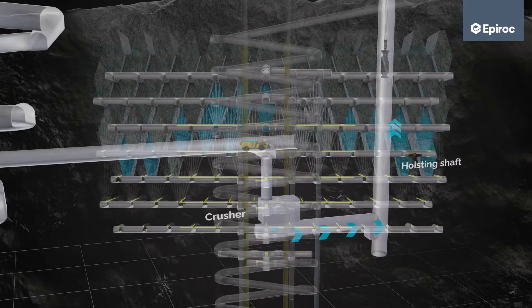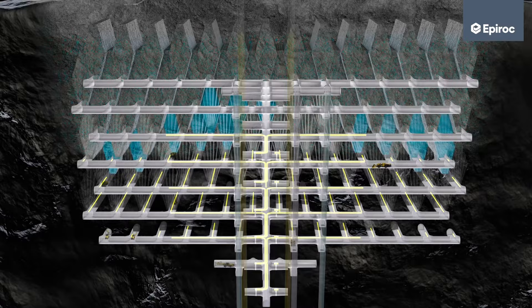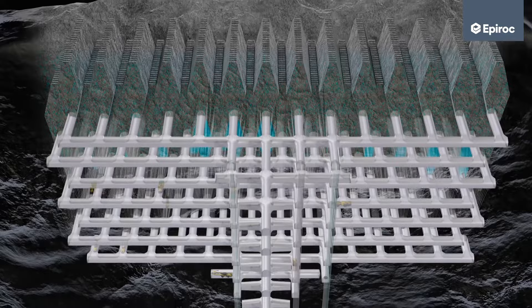Each sublevel features a systematic layout with drifts across the ore body. Activities in the parallel production drifts are performed simultaneously in order to maintain a good process in the mine.